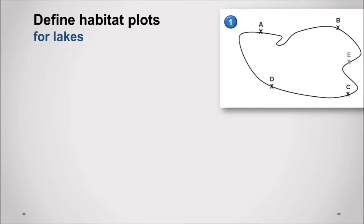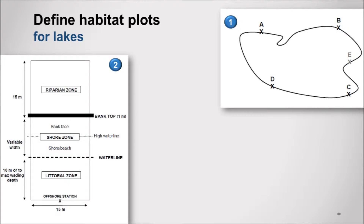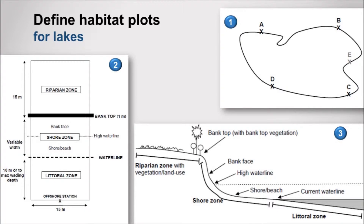When conducting a lake survey, observation plots — or HAB plots — should be spaced evenly around the lake. The plots are 15 meters wide and extend 15 meters from the bank top into the riparian zone and 10 meters from the water line into the littoral zone. The shore zone, if applicable, lies between the littoral and riparian zones and may include a beach and/or facing bank.